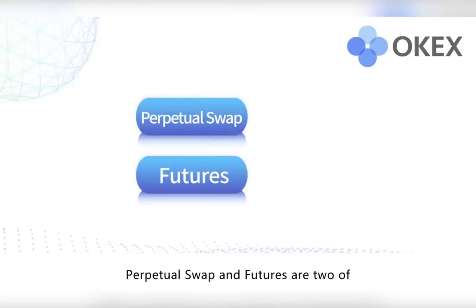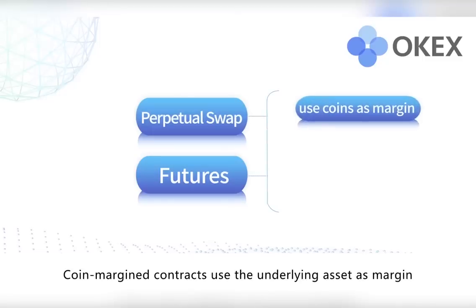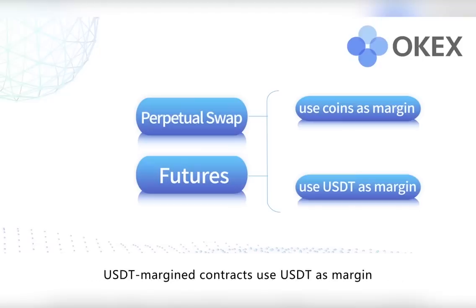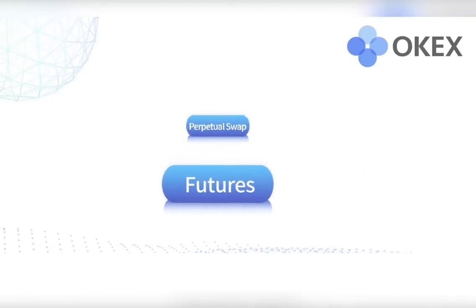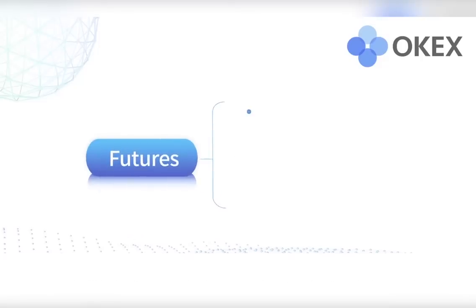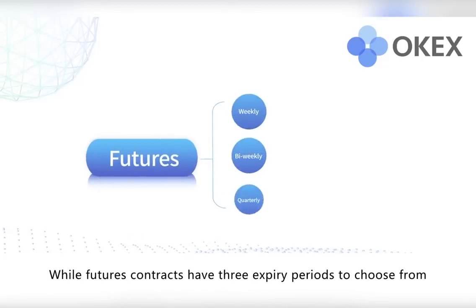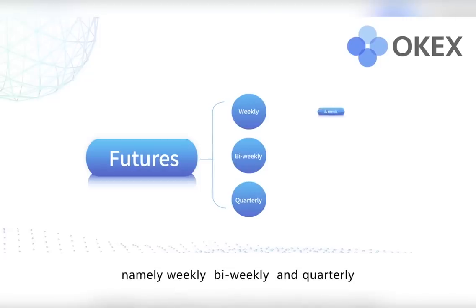Perpetual swaps and futures are two of the derivatives offered by OKEX. Each of them can be divided into two types: coin margin contracts use the underlying asset as margin, while USDT margin contracts use USDT as margin. Perpetual swap contracts have no delivery date and never expire, while future contracts have three expiry periods to choose from: weekly, bi-weekly, and quarterly.